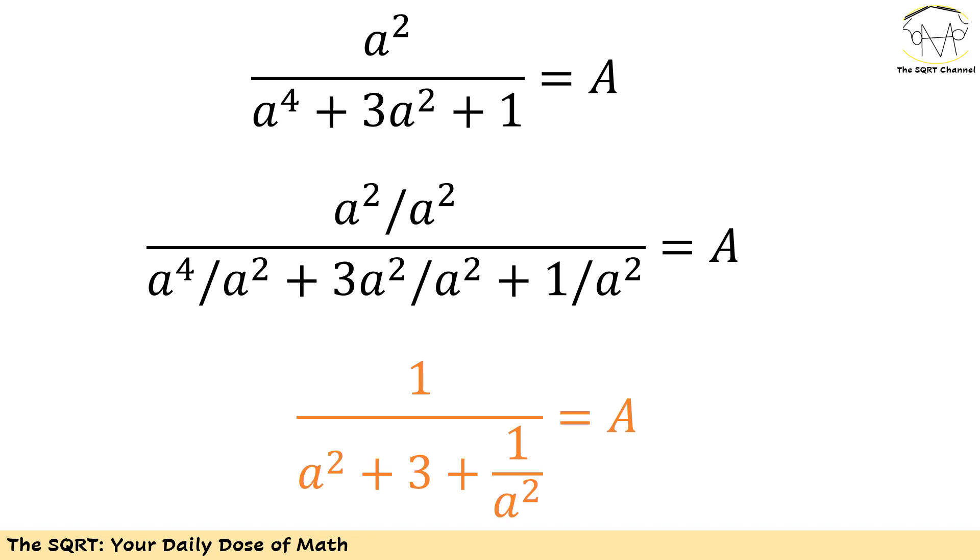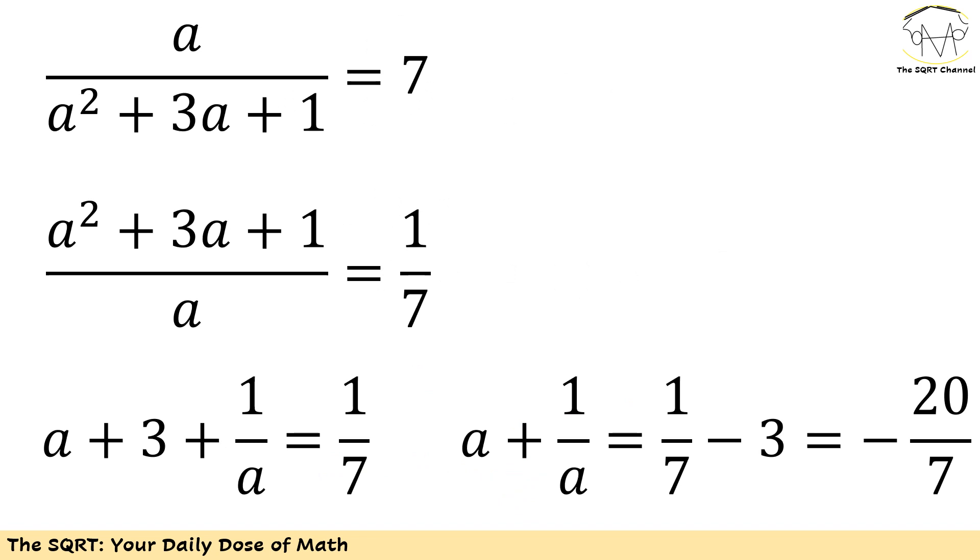Now let's move forward and see how I'm going to find the fraction that you are seeing here. Basically I know that a over a squared plus 3a plus 1 is 7. Let's inverse everything that I have and then I will end up with a squared plus 3a plus 1 over a equals 1 over 7, and then I'm going to simplify.